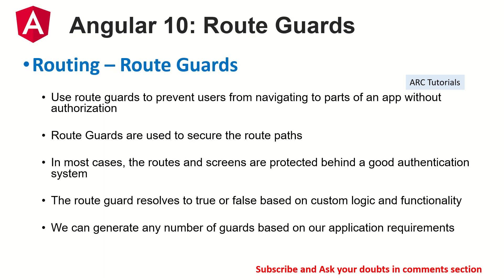Quick word for new viewers: what is a route guard? A route guard is like a security check or conditional check where you ask, 'Can a user access a particular route?' The result of the route guard is a boolean — true or false. If true, the user can access that route and its component. If false — for example, the user is not authenticated or not an admin — the user will not be able to access that route.